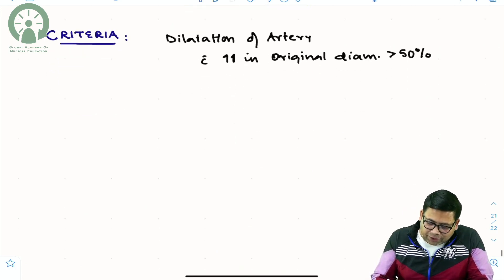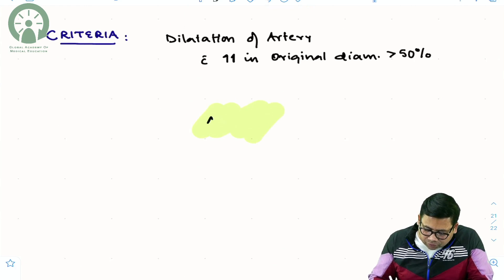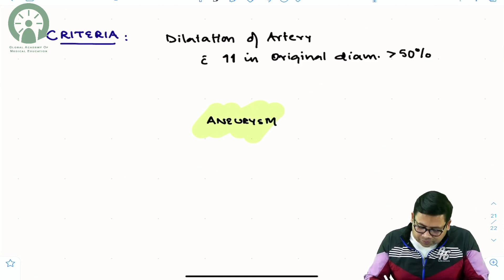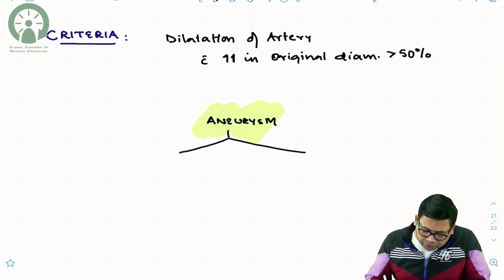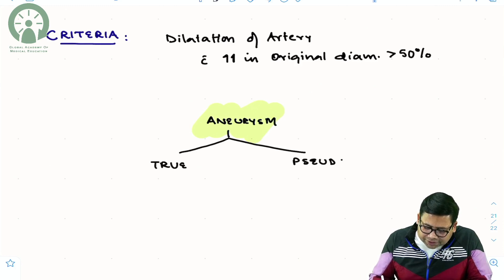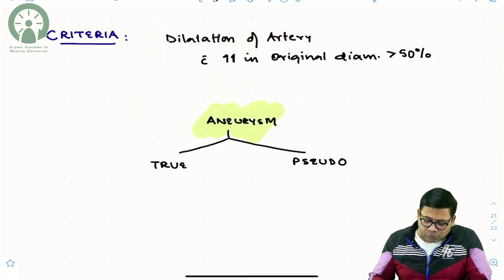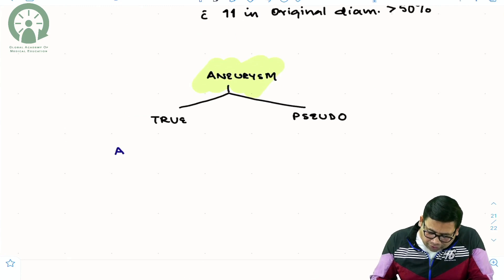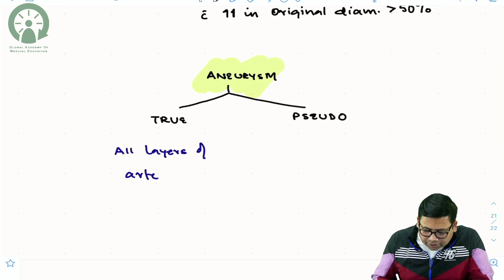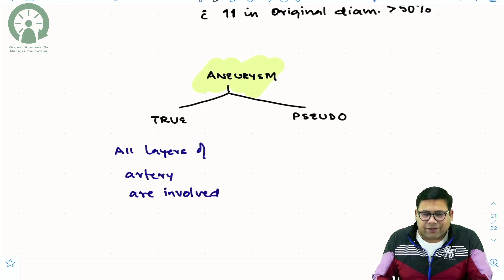When you talk about Aneurysms, they are of two types: one is a true Aneurysm and one is a pseudo Aneurysm. What is the difference? It is the same as true diverticulum versus pseudo diverticulum. In a true Aneurysm, all layers of the artery are involved, so the dilatation is complete.